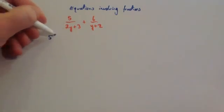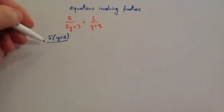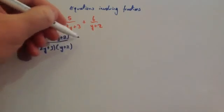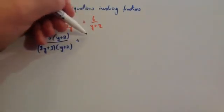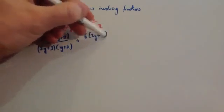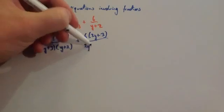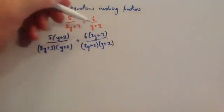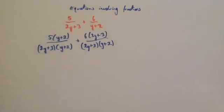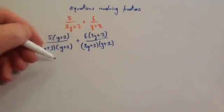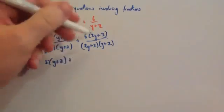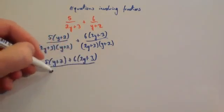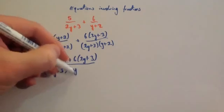We're going to multiply top and bottom of the first fraction by y plus 2, and top and bottom of the second fraction by 2y plus 3. So we get 5 bracket (y plus 2) divided by (2y plus 3)(y plus 2), plus 6 bracket (2y plus 3) divided by (2y plus 3)(y plus 2). Expressing that as a single fraction: 5 bracket (y plus 2) plus 6 bracket (2y plus 3), all over (2y plus 3)(y plus 2).